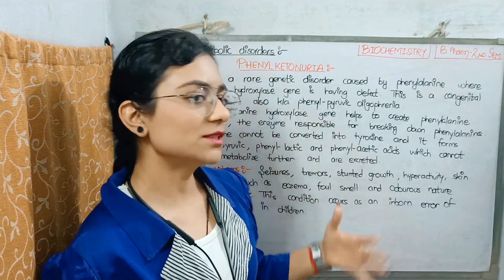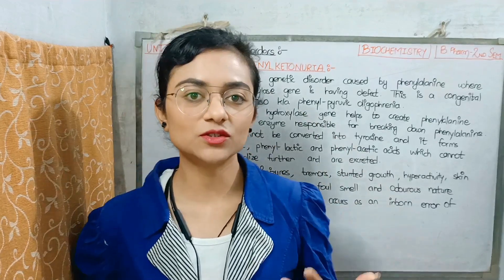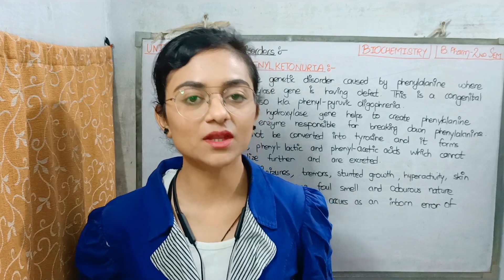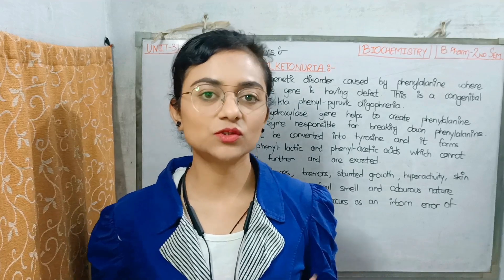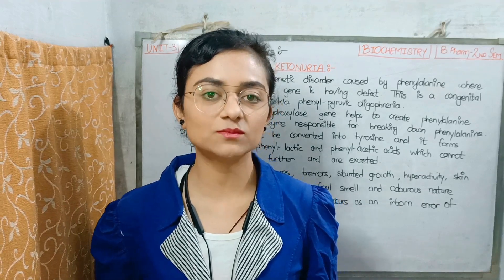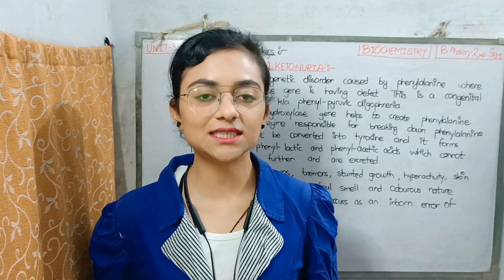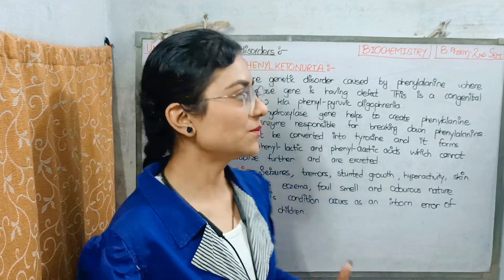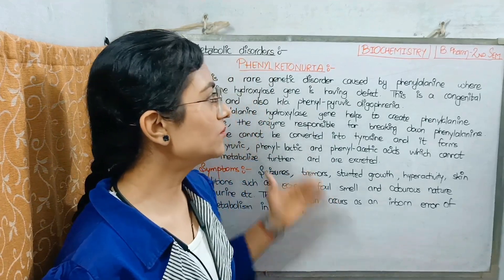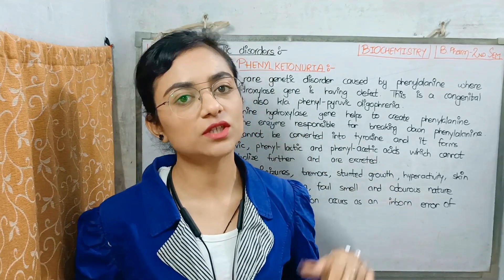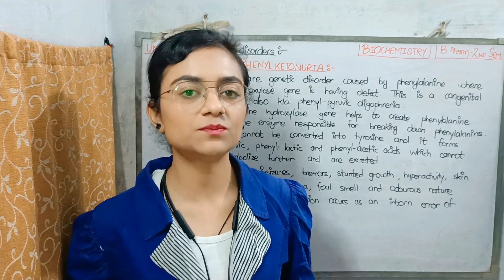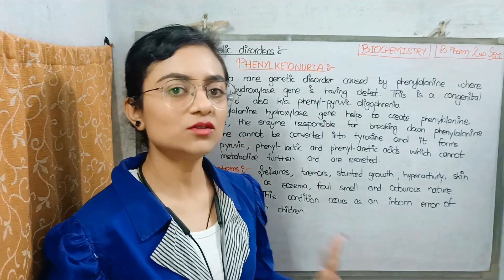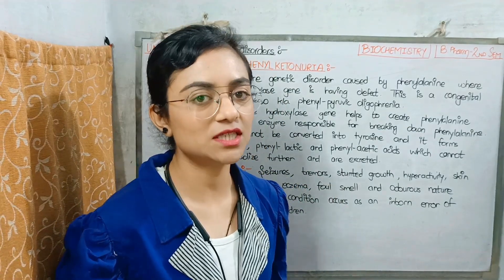The third unit of biochemistry notes are available — there is a link in the description box, you can download it from there. First, we will study two disorders in this video: one is phenylketonuria and the other is albinism.